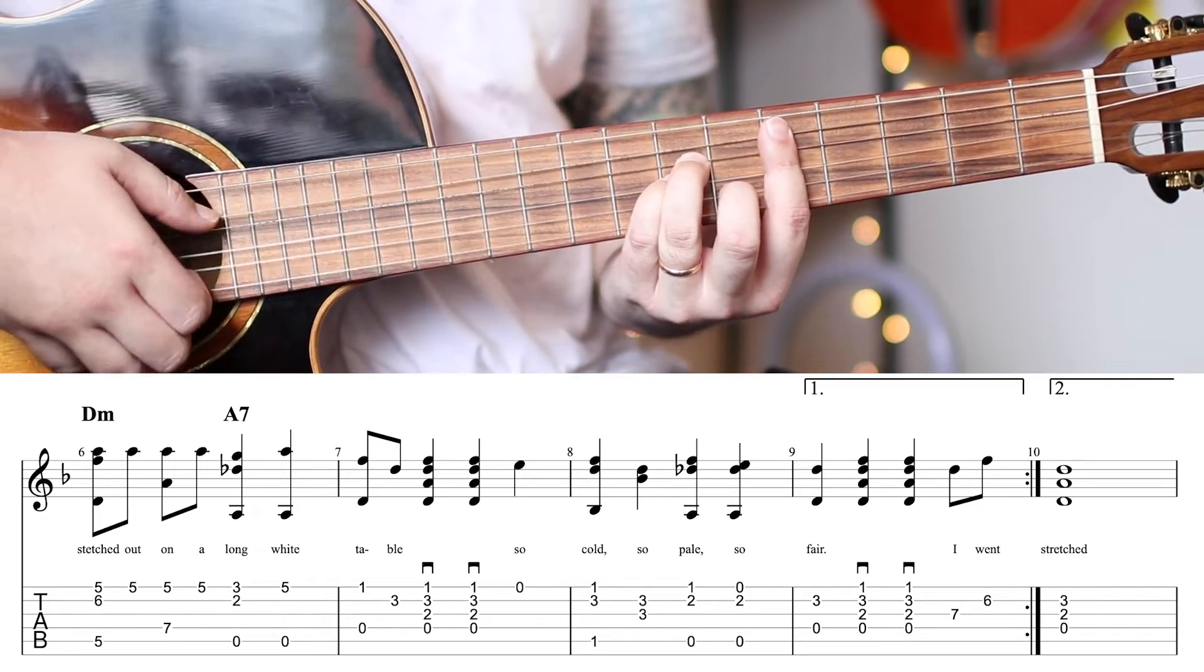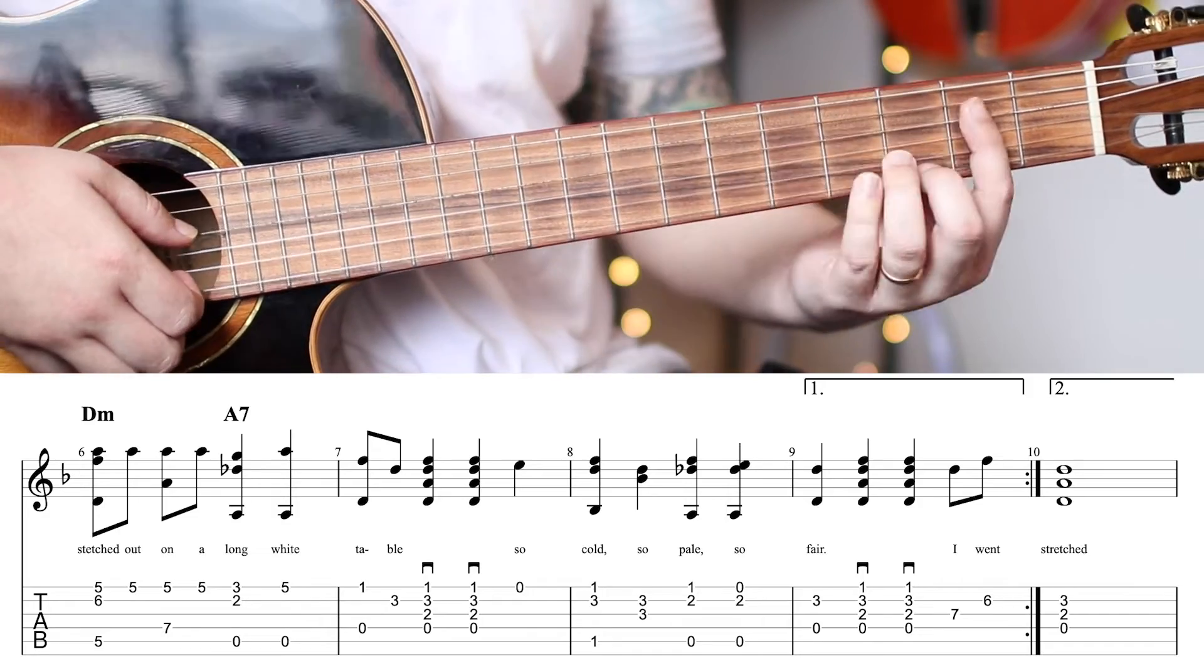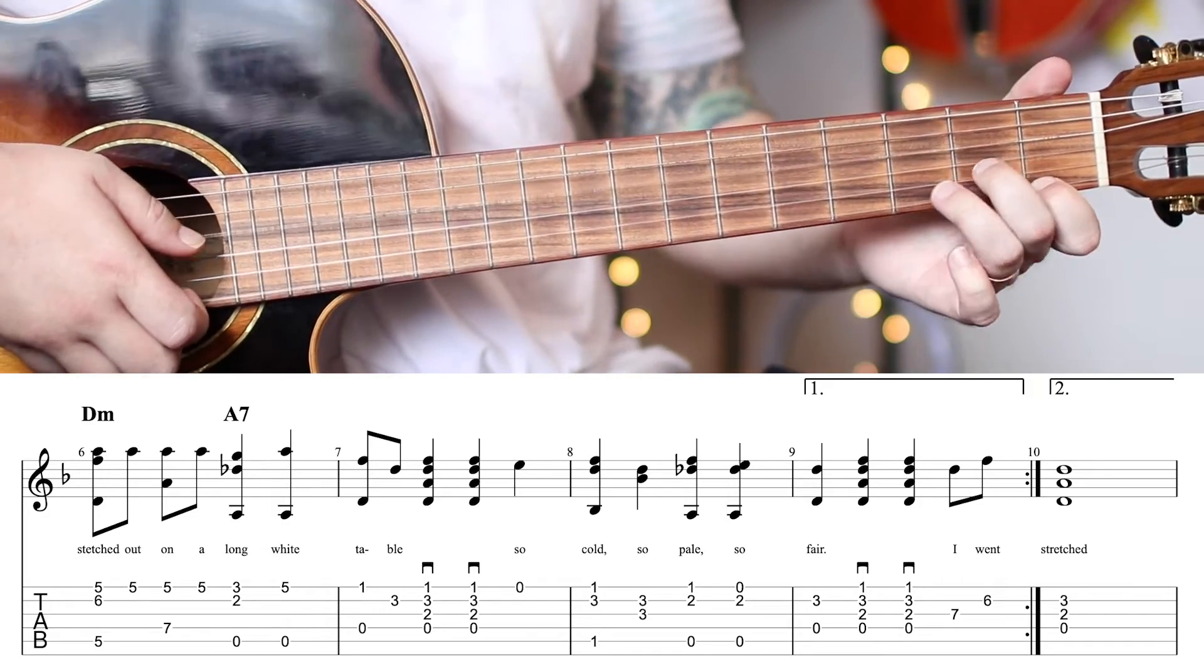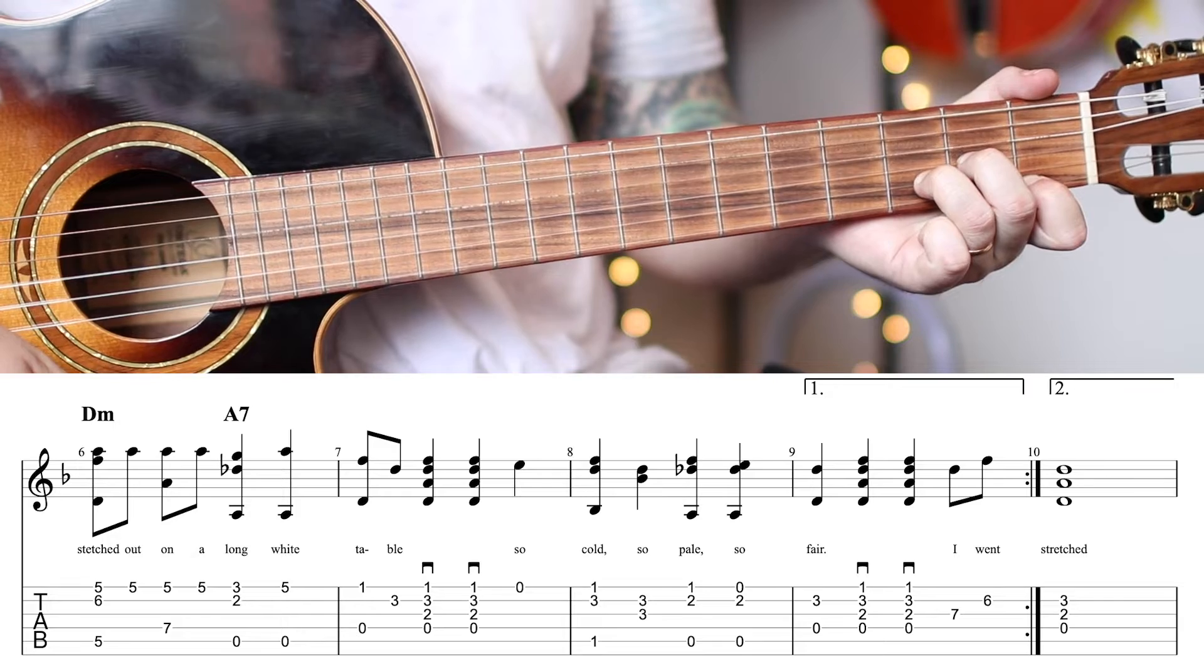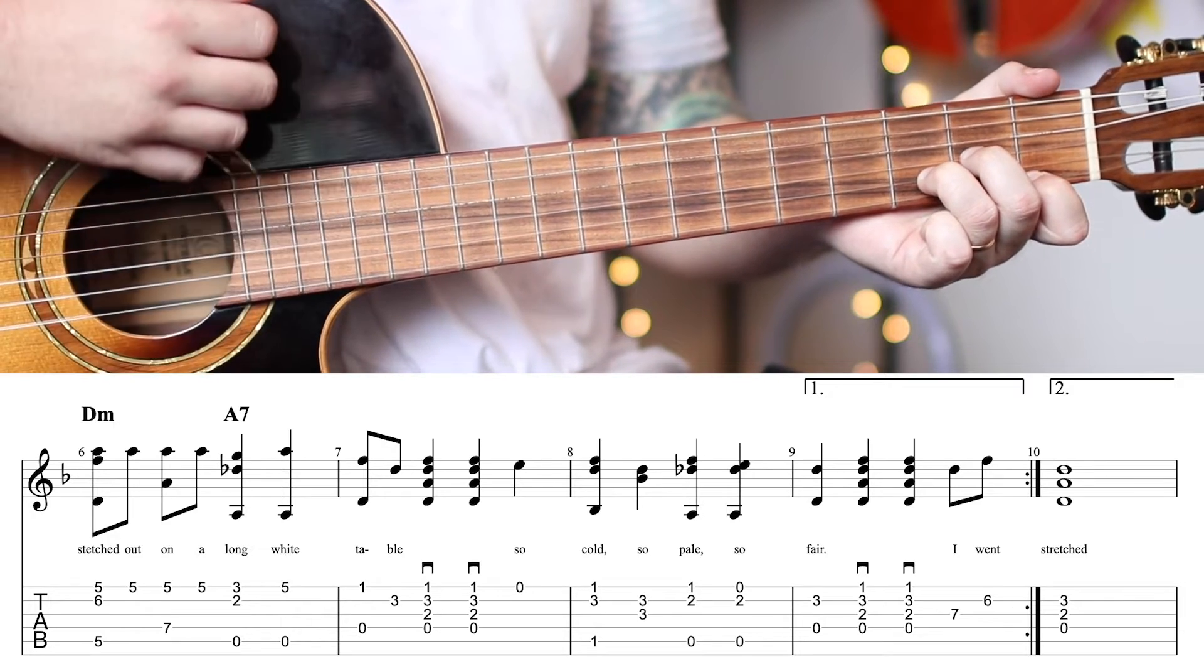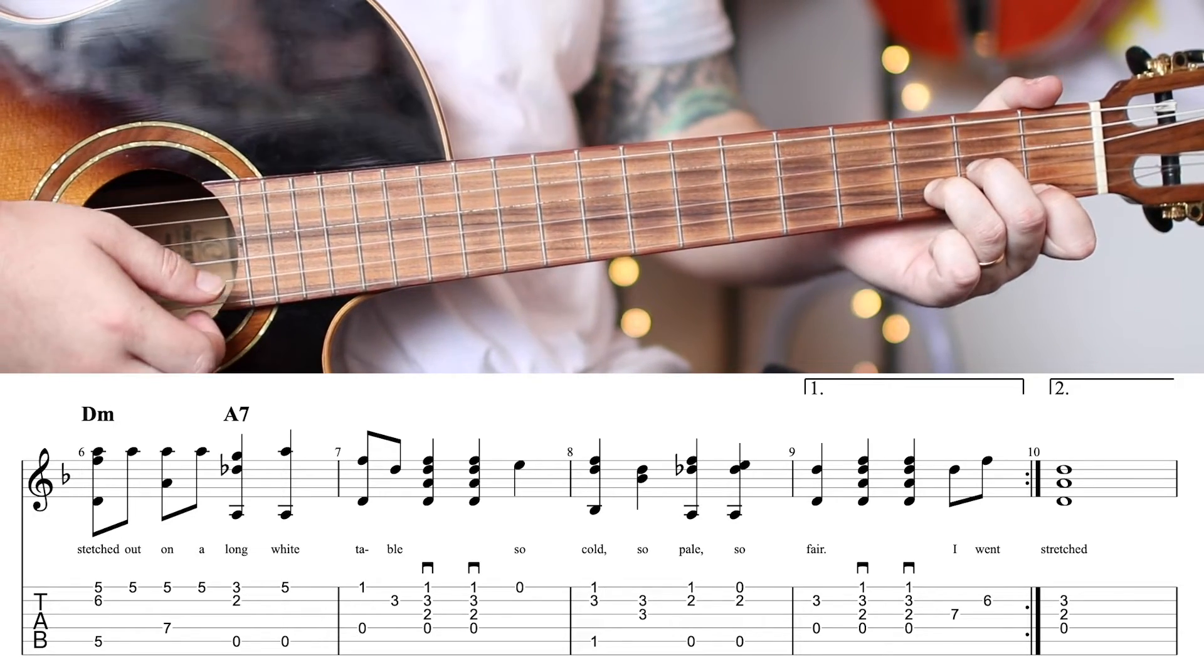So, up to there really slow. We get 4, and 1, and 2, and 3, 4, 1, and 2. Another down strum on the 3. 4th beat, open E string.